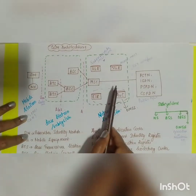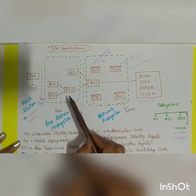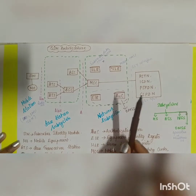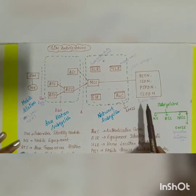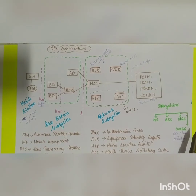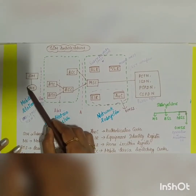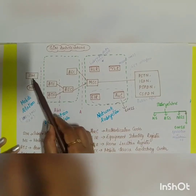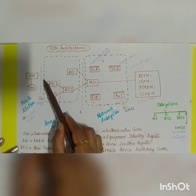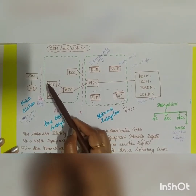The GSM architecture consists of four subsystems: the Mobile Station Subsystem, the Base Station Subsystem, the Network Subsystem, and the Operation and Maintenance Subsystem. The Mobile Station Subsystem consists of both the SIM (Subscriber Identity Module) and the ME (Mobile Equipment), which is your handset.